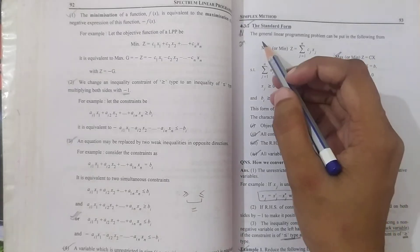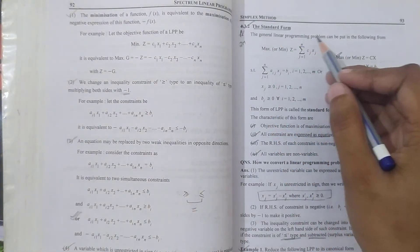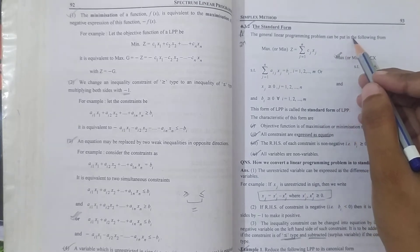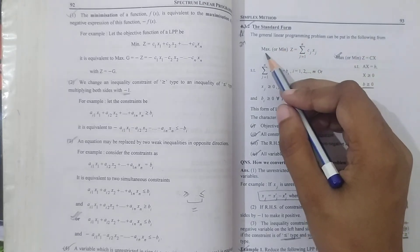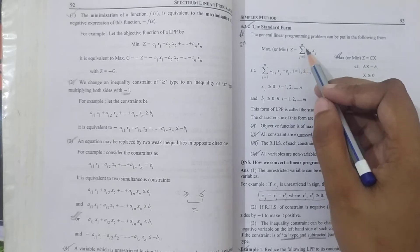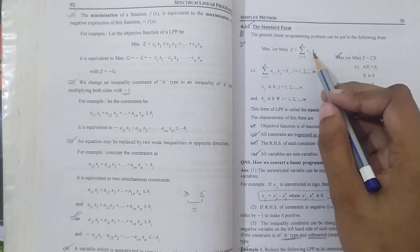The standard form of a linear programming problem can be put in the following form: maximize or minimize z equals summation j equals 1 to n of cj xj.